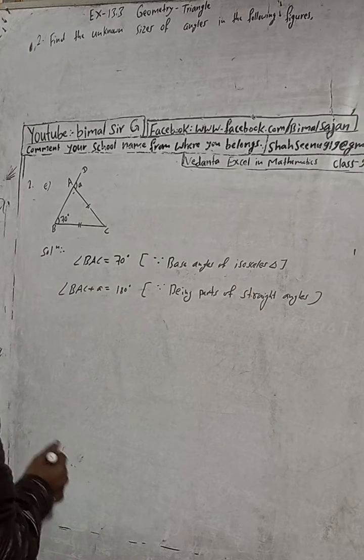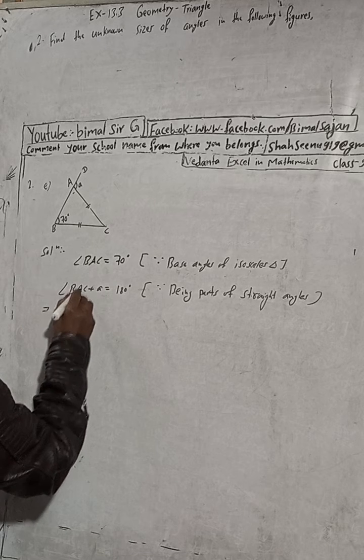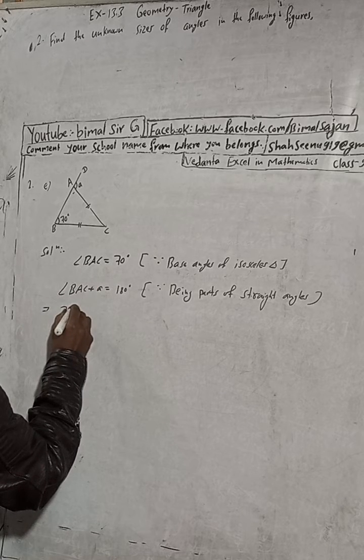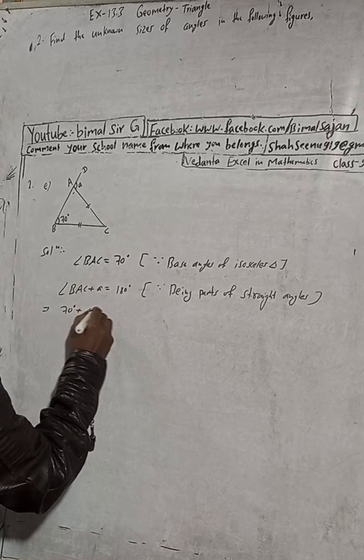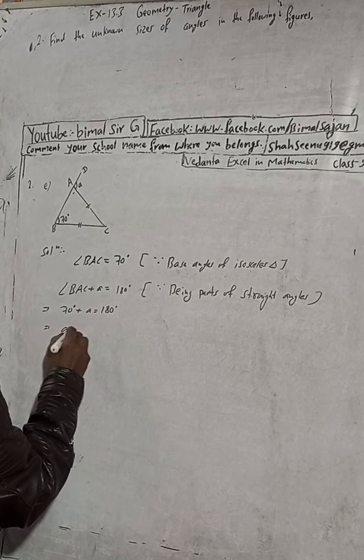Now here, angle BAC we have written 70 degrees plus angle A is equal to 180 degrees. Now you can write here A is equal to 180 degrees...